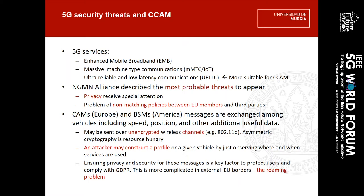The Next Generation Mobile Networks Alliance describes the most probable threats to privacy, as well as non-matching policies between European Union members, as appearing among them. In vehicular networks, messages may be sent over unencrypted wireless channels and asymmetric cryptography is considered resource-hungry. Even if impaired batteries are not considered a problem like in IoT, wireless channel utilization and CPU time are still to be optimized. An attacker may take profit of service access to create a profile of a given vehicle. Roaming complicates even more the fulfillment of GDPR since each member country adjusts the regulation to their needs.